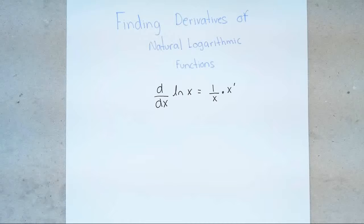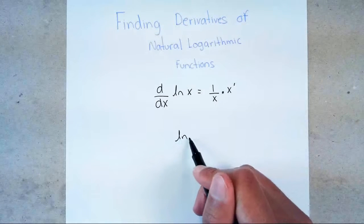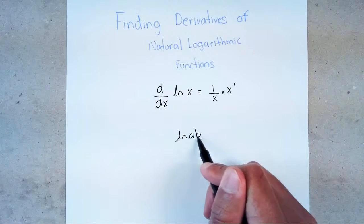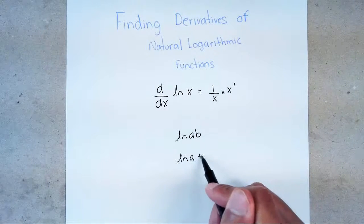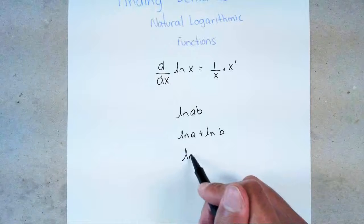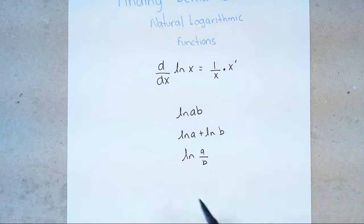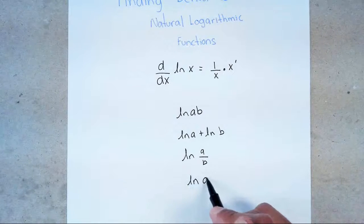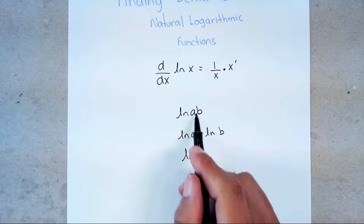The thing with ln is you have to know some basic rules. The first rule is anytime you have ln(a × b), you're able to separate these as ln(a) + ln(b), because anytime you're multiplying you end up adding. Another rule is ln(a/b) — when you divide, that means you're going to subtract, so ln(a) minus ln(b). Division means subtraction, multiplication means addition.